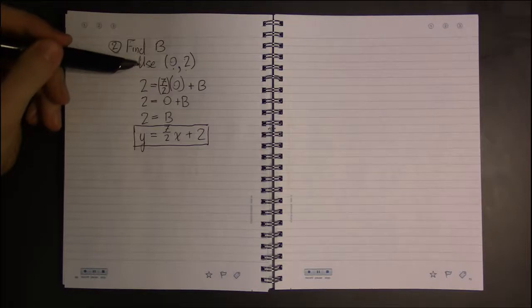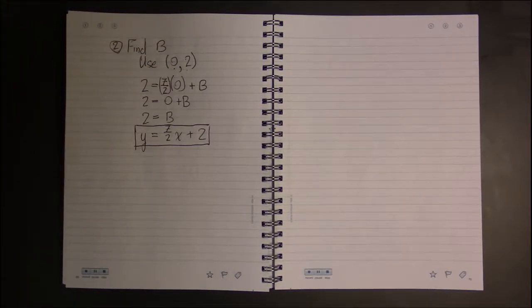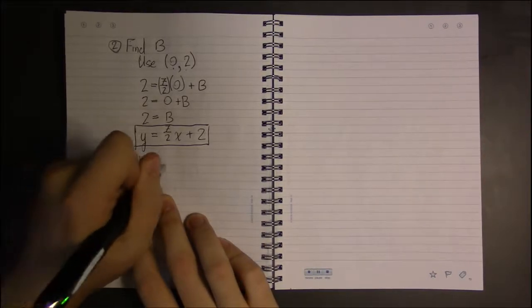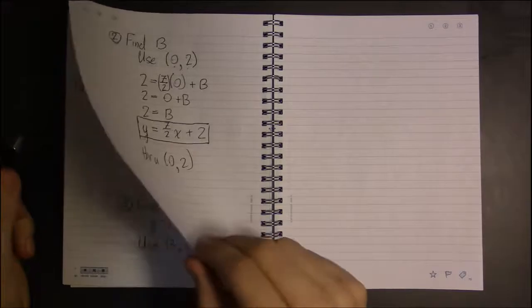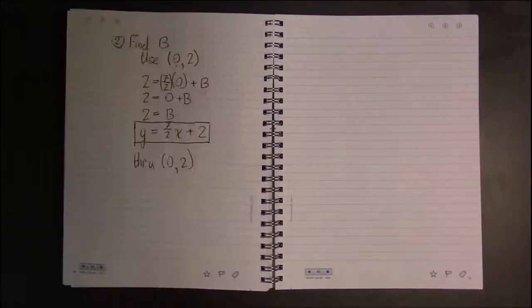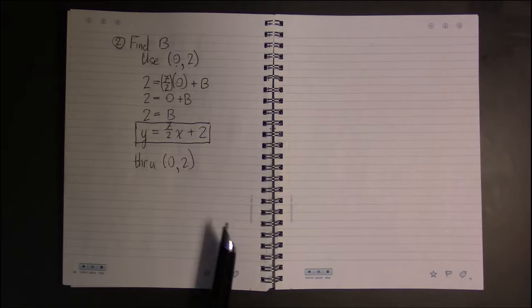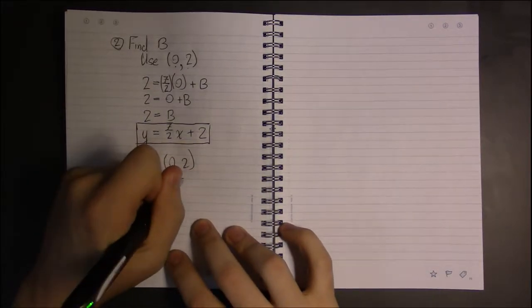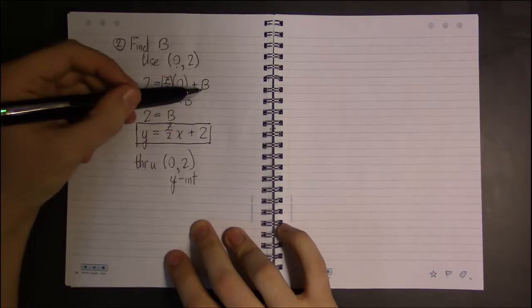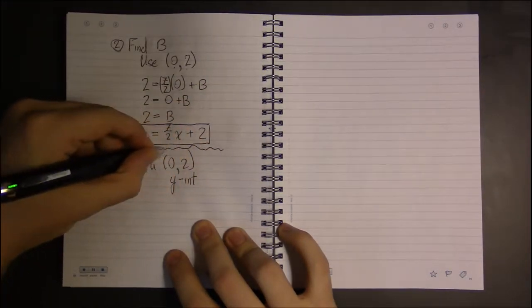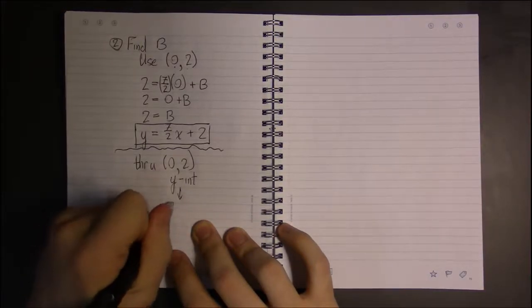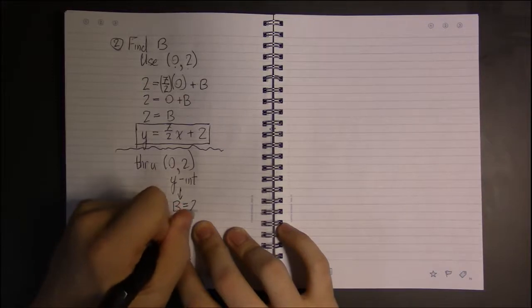Now aside from point slope and just straight plugging in, we were told that the line passes through the point (0, 2). That's what they told us here - the line passes through this point and the line passes through this point. Well this is a rather special point, this point is the y-intercept. But B is the y-intercept - it's the y-coordinate of the y-intercept. So rather than go through all this, we could have just looked at this point and said 'oh, this point tells us that B is equal to the y-coordinate, 2.'